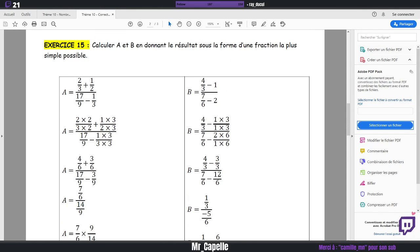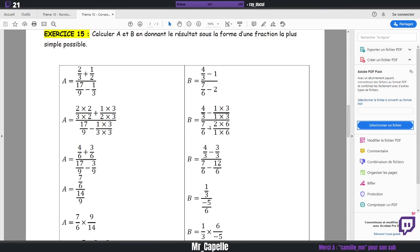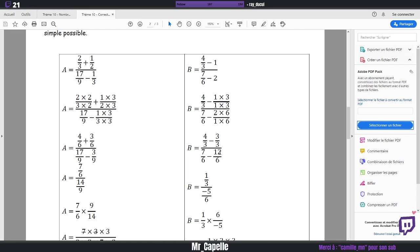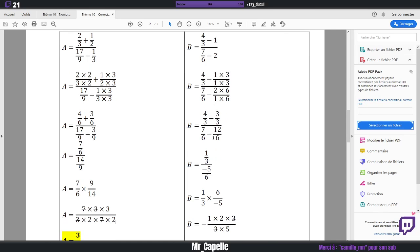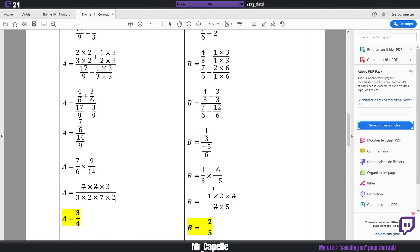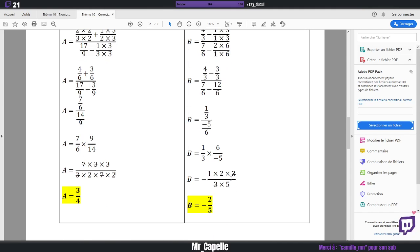Et ensuite, on refera ça en cours, parce que je pense que ça ne va pas être bien acquis pour tout le monde. On simplifie en même temps. C'est-à-dire que du coup, on fait 7 x 3 x 3 en haut. Et du coup, 3 x 2 ici, plus 7 x 2 en bas. Et on barre tout ce qui est en commun. On barre les 3, on barre les 7 qui sont en commun. Il nous reste 3 en haut et 4 en bas. Donc, 3 quarts. Et donc, pour le deuxième, c'est la même chose avec des signes moins. On obtient moins 2 cinquième.